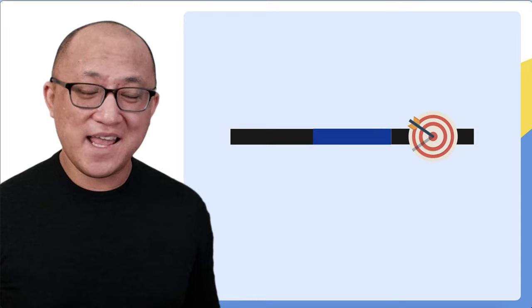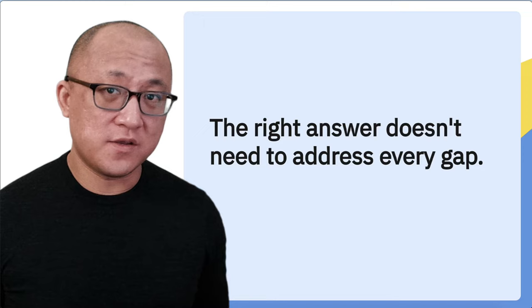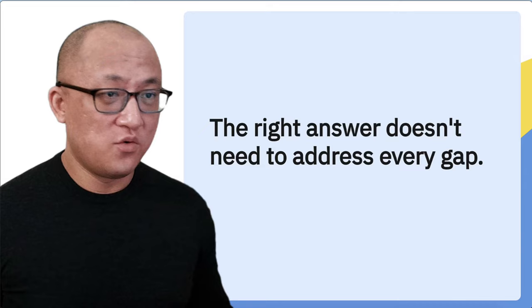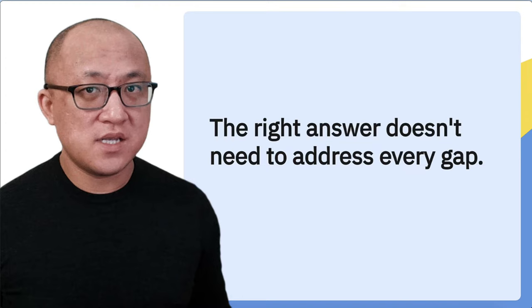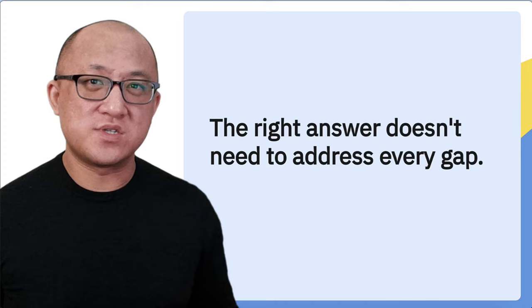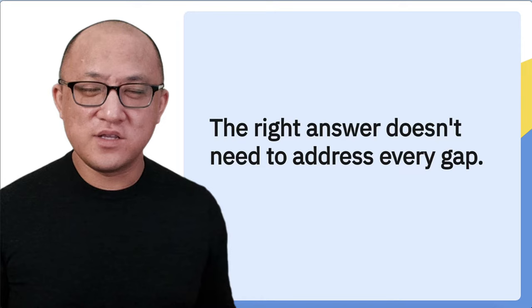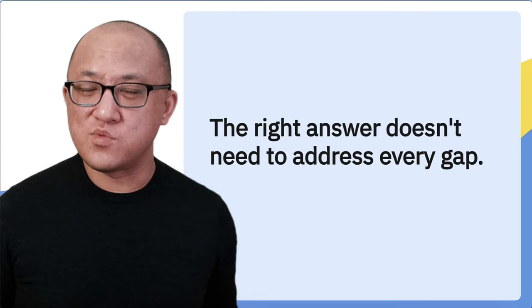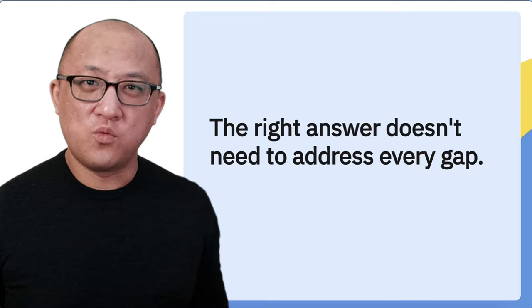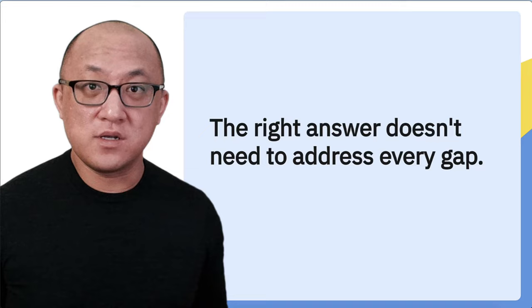Tip number two for necessary assumption questions is to remember that the right answer does not need to address every single gap in the argument. In a necessary assumption question, you can have arguments that are really bad, with multiple problems, multiple flaws, multiple gaps. But sometimes when people are debating between two answers, they use reasoning like: 'This answer looks pretty good, but the other one is more complete, so I'll go with the more complete one.' That is a terrible line of reasoning, because whether an idea is necessary for the argument to be valid has nothing to do with how complete the assumption is.